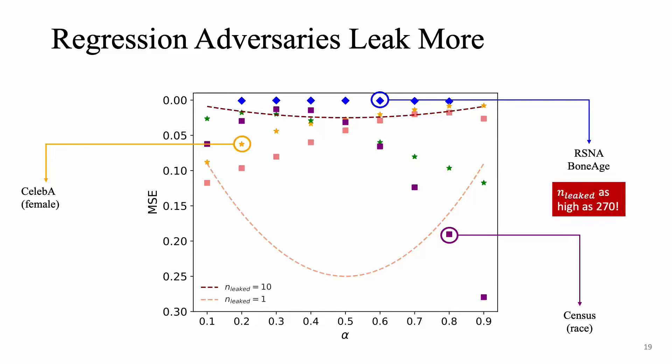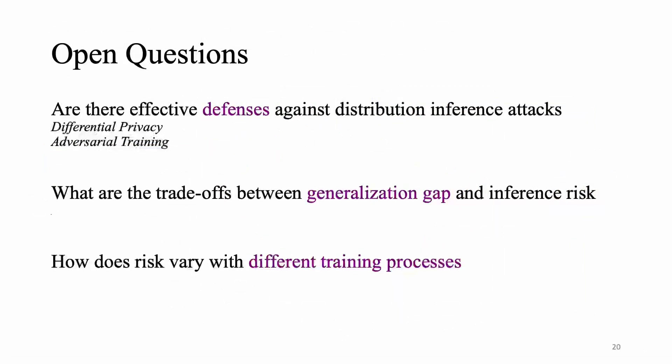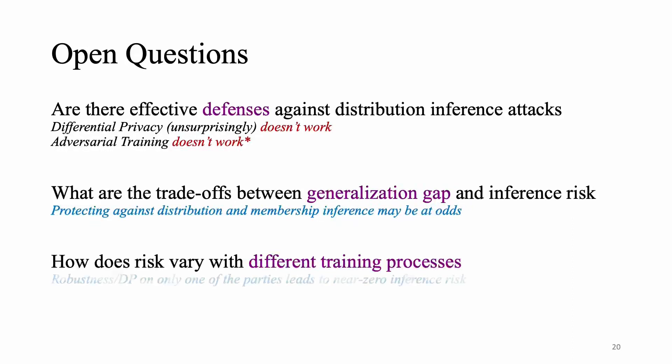There's still a lot of open questions in the field of distribution inference. First of all, there's no known good defenses right now, and even though there are good candidates like differential privacy and adversarial training which might work out, even though there's no theoretical reason for them to, our empirical experiments show that there's no hope for them and they actually don't seem to work in any of the cases. Next is trying to understand if there's any trade-offs with distribution inference and other kinds of inference or even things like model generalization. And our initial experiments seem to suggest that protecting against distribution level inference attacks and membership level inference attacks might be at odds. And then further trying to understand how differences in training processes for these models can impact inference risk.